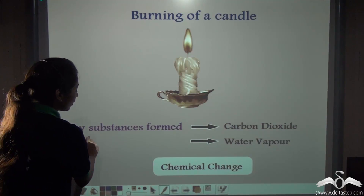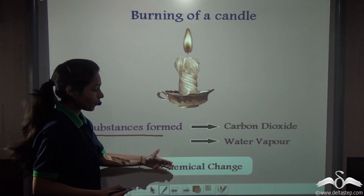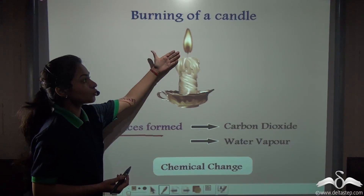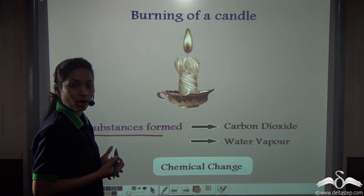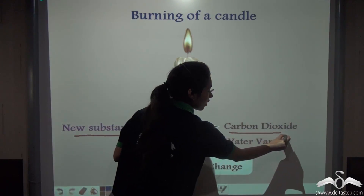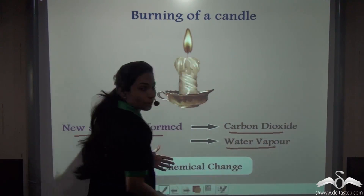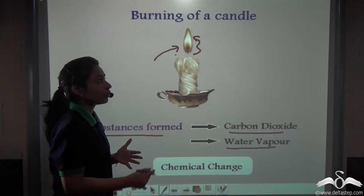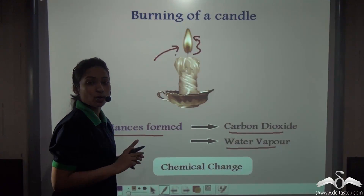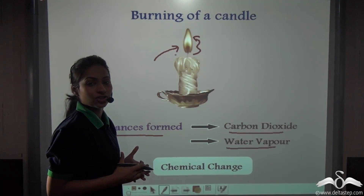You can see that new substances are formed when there is a chemical change. What new substances are formed here? One is carbon dioxide and the other is water vapour. So now you know that burning of a candle is both a physical and a chemical change.